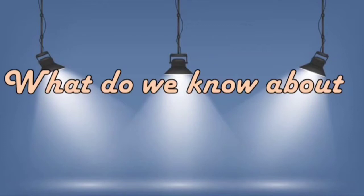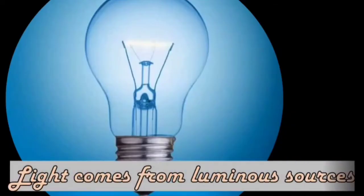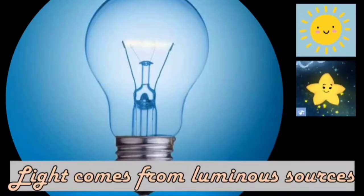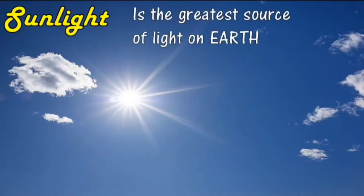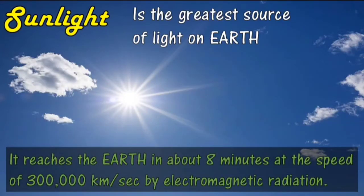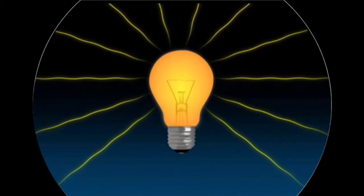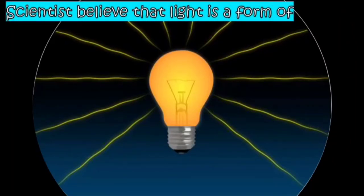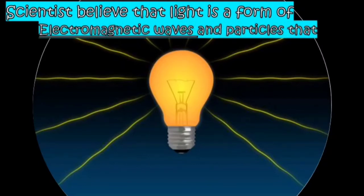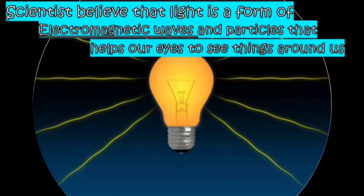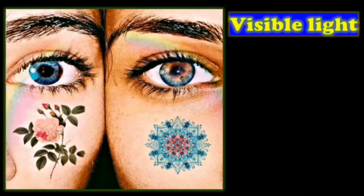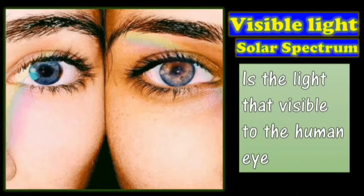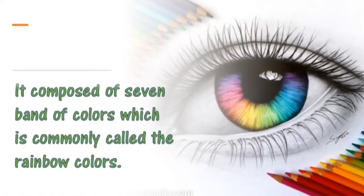But what do we really know about light? Light comes from luminous sources like the sun, stars, and burning fuels. The sunlight is the greatest source of light on earth. It reaches the earth in about 8 minutes at the speed of 300,000 km per second by electromagnetic radiation. Scientists believe that light is a form of electromagnetic waves and particles that helps our eyes to see things around us by reflection. The visible light, or the solar spectrum, is the light visible to the human eye. It is composed of 7 bands of colors, commonly called the rainbow colors.